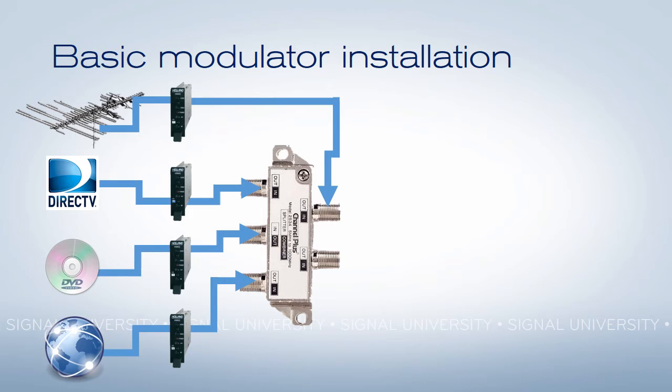All the signals are passed through modulators and wired into a combiner. That combiner puts them all on a single cable, and the single cable goes out into the world, reaches as many televisions as you need, and televisions can just tune channel 2, channel 3, channel 4 to get what they need instead of having to change video sources.